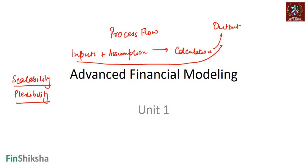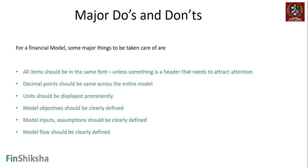So that's where we start, and that's what we're going to look at - the major do's and don'ts while building a model. Some major things need to be taken care of. Some are very basic in terms of aesthetics: we have to be using the same font everywhere. So if it's Times New Roman, it's Times New Roman everywhere. If it is Calibri, it's Calibri everywhere, unless something is a header.